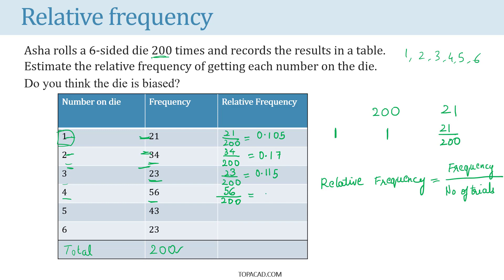Similarly, relative frequency of number 5 is 43 by 200 which is equal to 0.215. So, this is how we calculate the relative frequency.